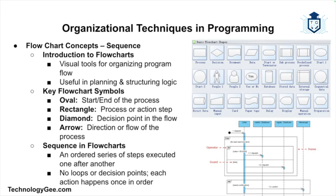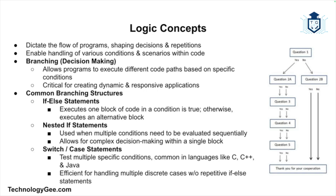The most basic flowchart concept is sequence — an ordered series of steps that the program follows one after the other. There are no decisions or loops in a sequence; each action is executed only once. Flowcharts are useful for visualizing the structure of programs, helping programmers ensure they follow the correct logic flow.